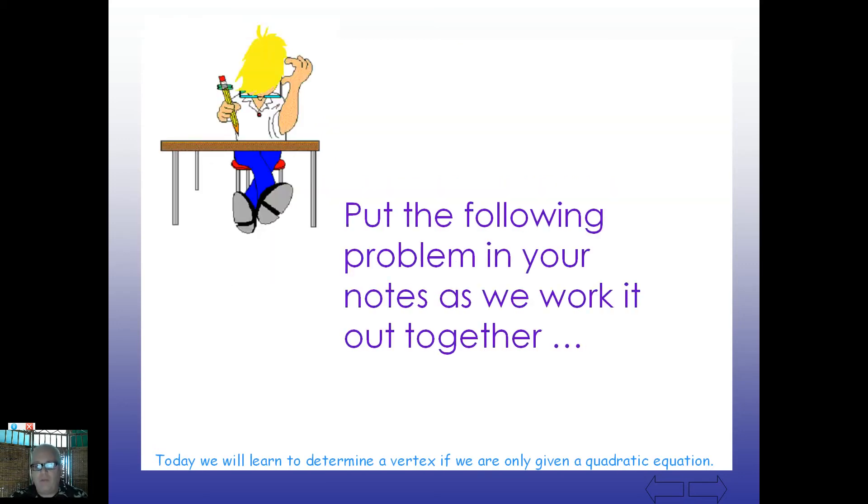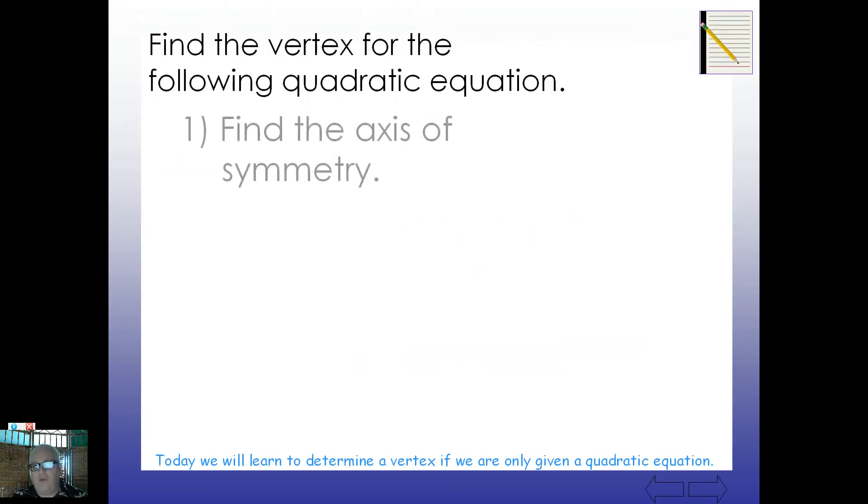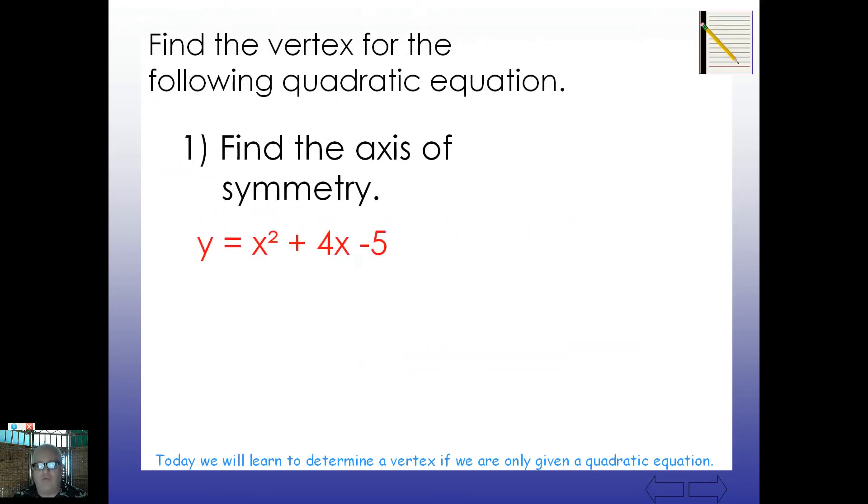So, put the following problem into your notebook, please, right now as we work together, right here. Let's find the vertex for the following quadratic equation. First of all, let's find the axis of symmetry. x squared plus 4x minus 5. How do we do that? Remember how we found that yesterday?